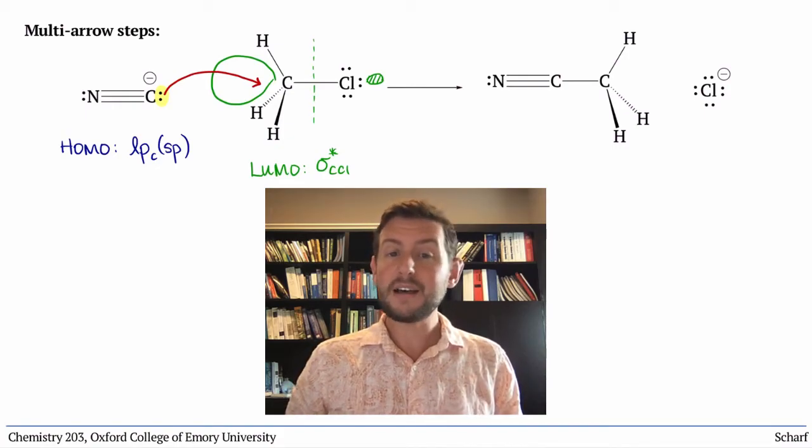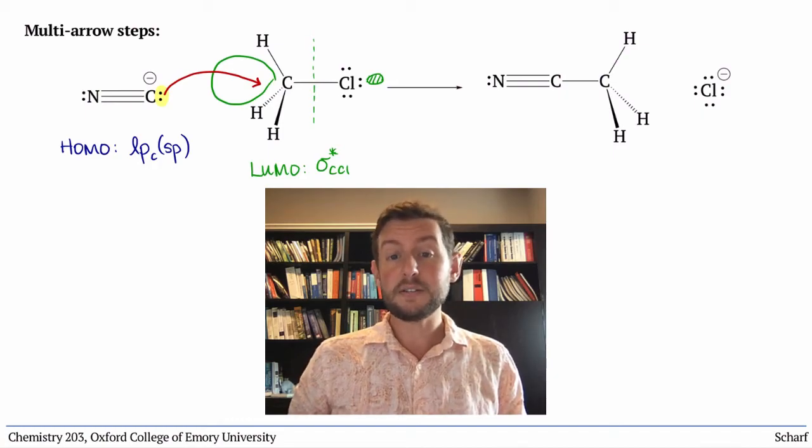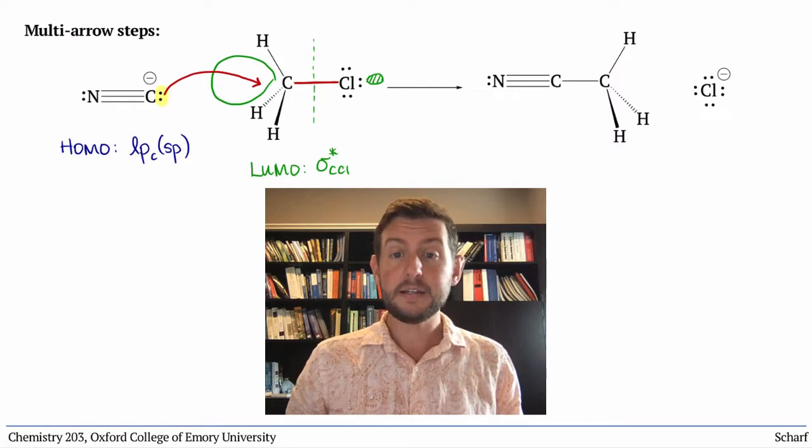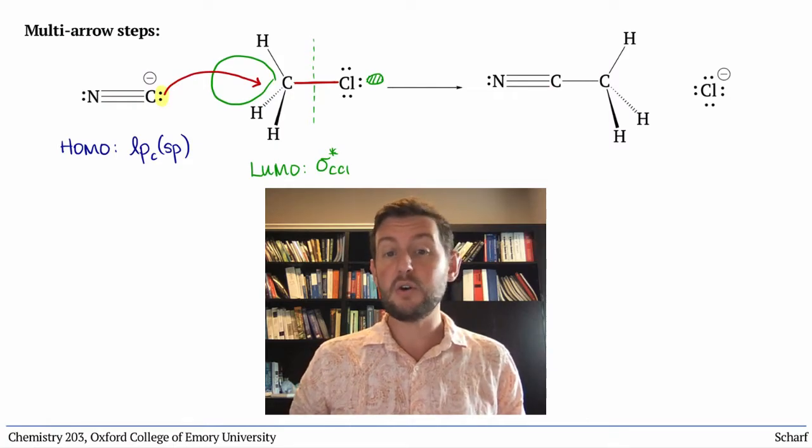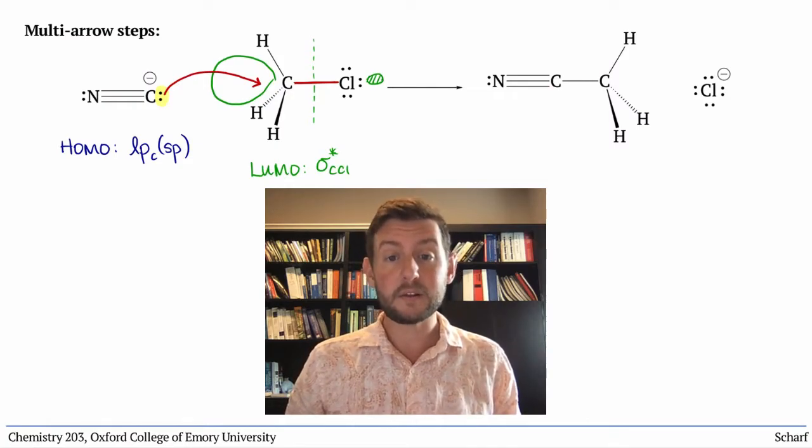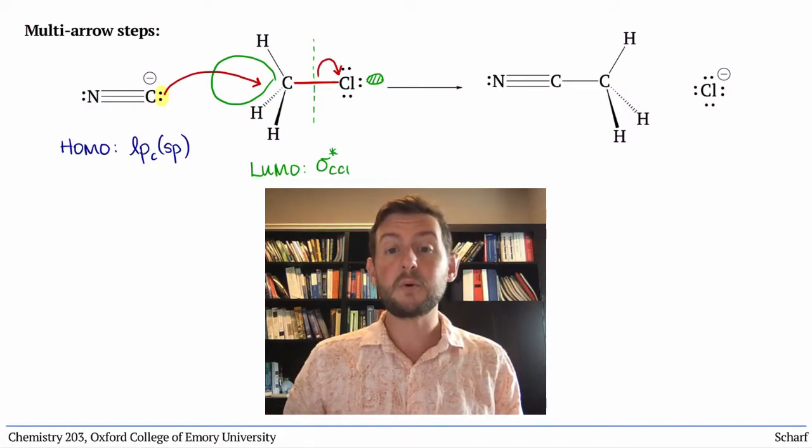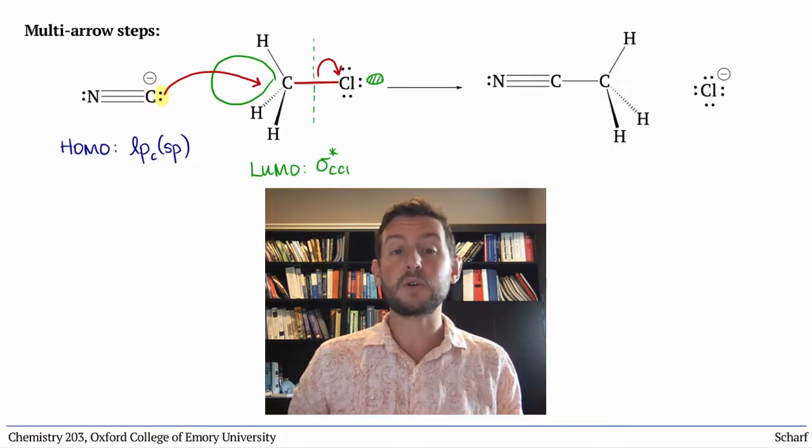But we're not done. Since the LUMO was CCl sigma star, we've broken the CCl sigma bond. Those bonding electrons are no longer shared between the carbon and the chlorine, so must go somewhere. They go toward chlorine, the more electronegative of the two atoms that were sharing them.